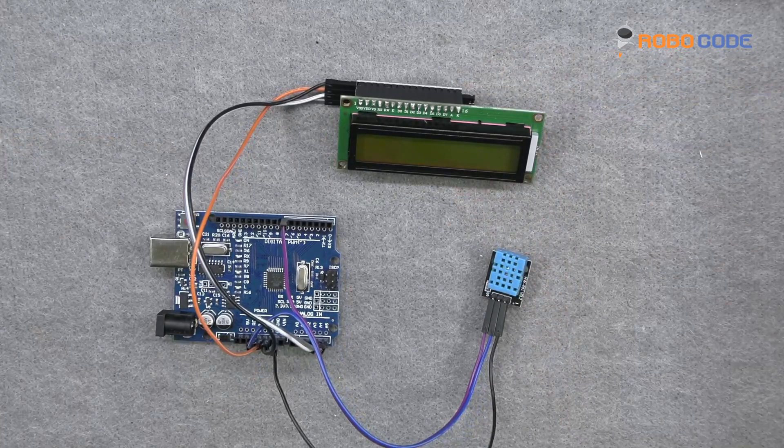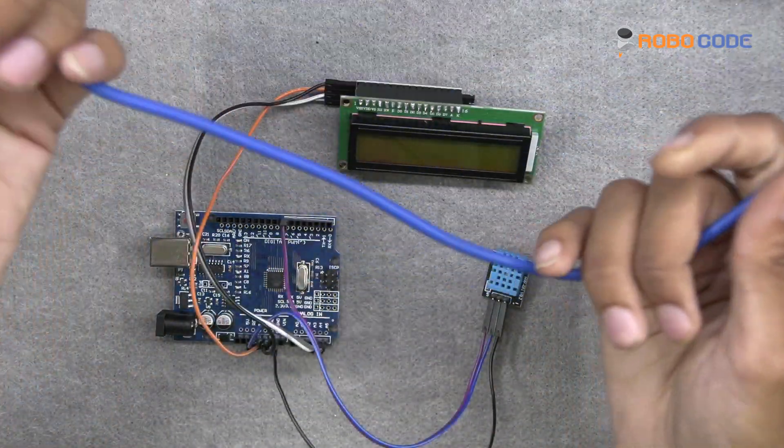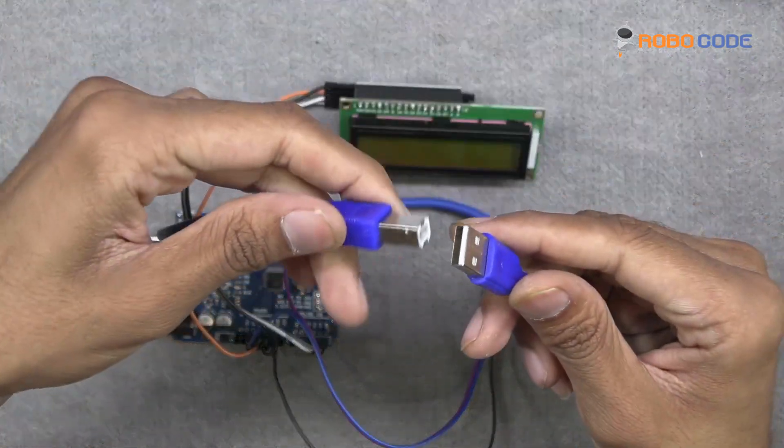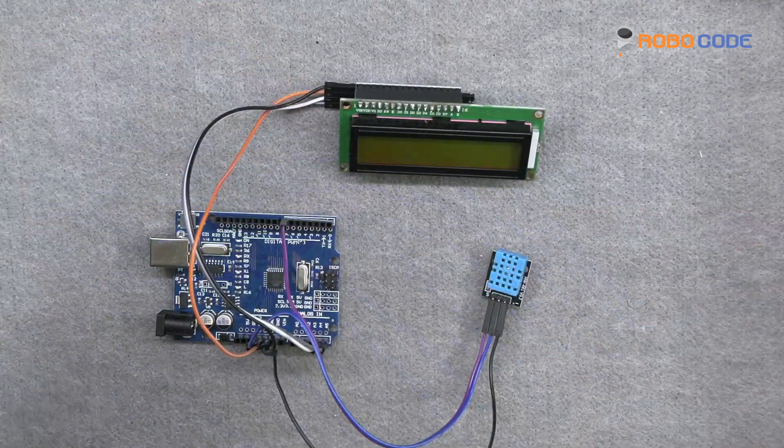Once this is done, we will take the USB cable, we will connect it to the Arduino UNO and then we will upload the code. I will show you how to upload the code.